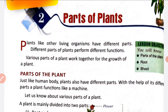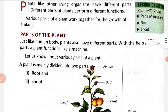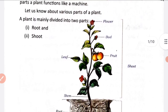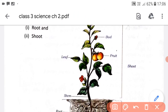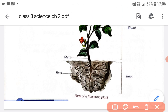Plant ke different parts plant growth ke liye together work karte hain. Now, a plant is mainly divided into two parts. First is root and second is shoot. Plant ka woh part jo soil ke oopar paaya jata hai, yeh kehlata hai shoot. Shoot ke other small parts hote hain like bud, leaf, and stem. These are sub-parts of shoot.